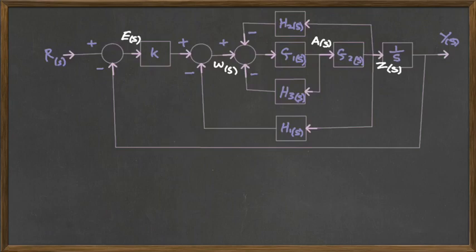We have something basically at the beginning of all the blocks. The E(s) is at the beginning of the K block. The W(s) is at the beginning of the GH, G1, H2, and H3 block, and it separates the two decisions. The A is at the beginning of the G2 block, and the Z is at the beginning of the 1 over s block.